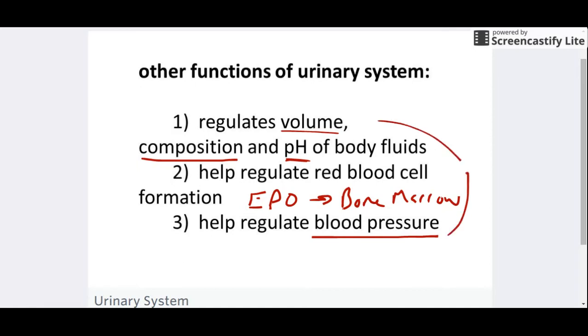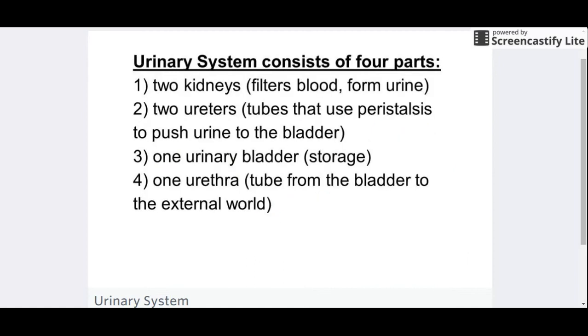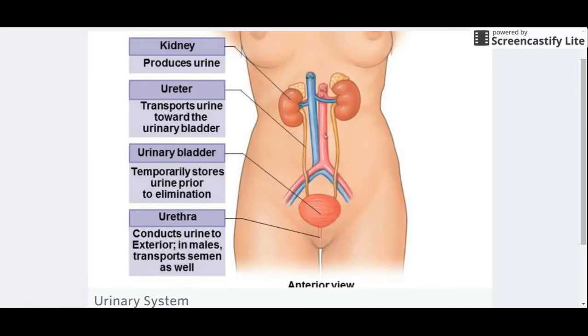For the structure and anatomy, we've got two kidneys, two ureters, the bladder, and the urethra. It's easier to see them in the diagram. We've got our two kidneys, one on either side right there. That's where all the work is going to be done.